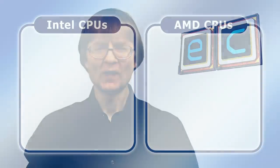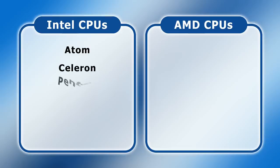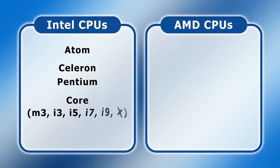On the Intel side, the range starts with their latest 2021 Atom chips, followed by the more powerful Celeron and Pentium families. Next we get to Intel's Core range, which includes their Core i3, Core i5, Core i7, Core i9, and Core X series CPUs. Lastly we have the Xeon chips that Intel sells for servers and other mission-critical computing applications.